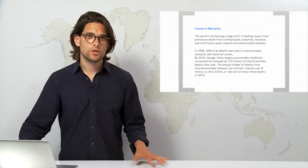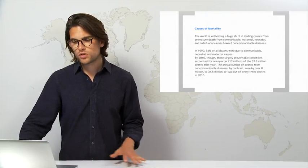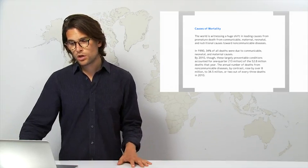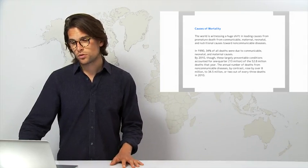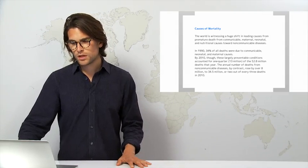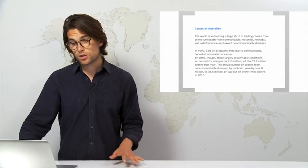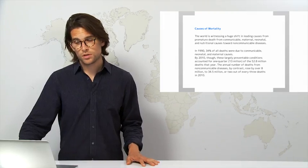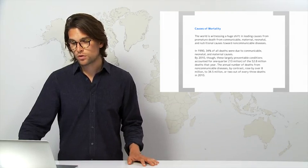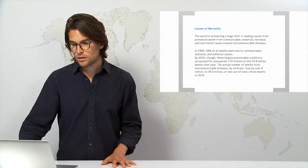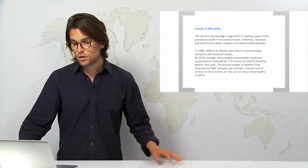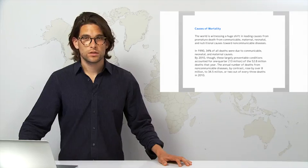In terms of causes of mortality, we've also seen dramatic changes. The world is witnessing a huge shift in the leading cause of premature death, from communicable, maternal, neonatal and nutritional causes towards non-communicable diseases. In 1990, 34% of all deaths were due to communicable, neonatal and maternal causes. In 2010, though these largely preventable conditions account for still one quarter of the 52 million deaths, the annual number of deaths from non-communicable diseases have risen by 8 million to 34.5 million, or two out of three deaths in 2010.